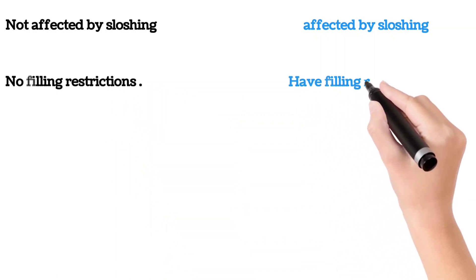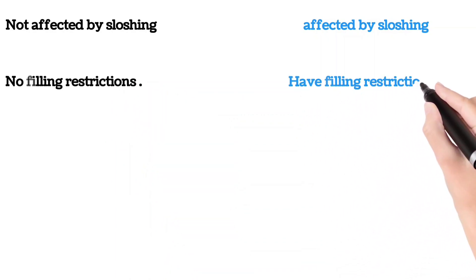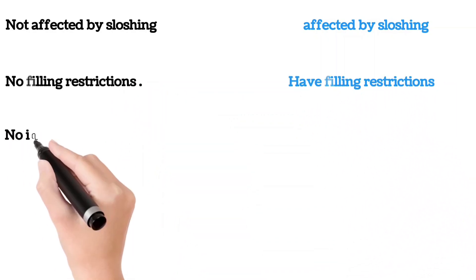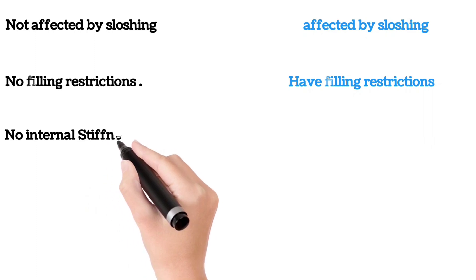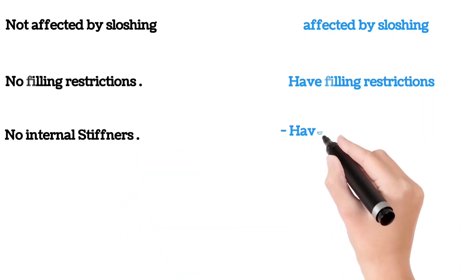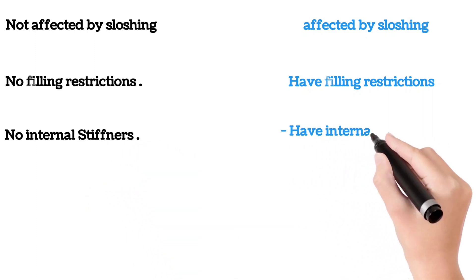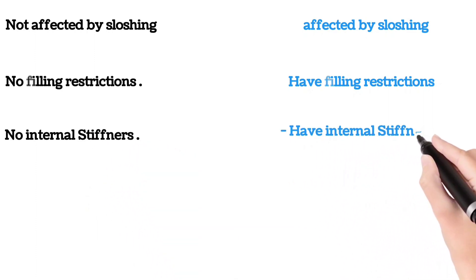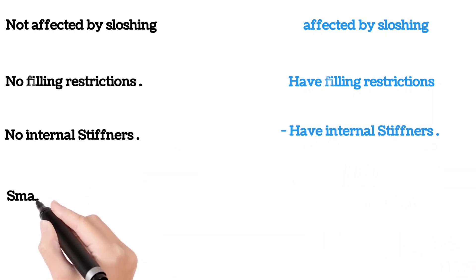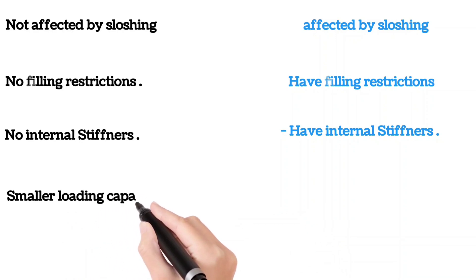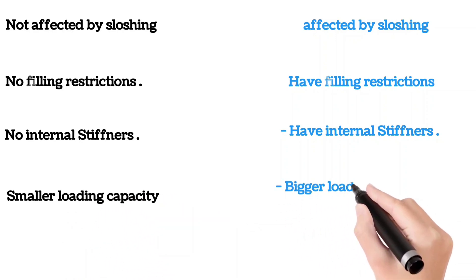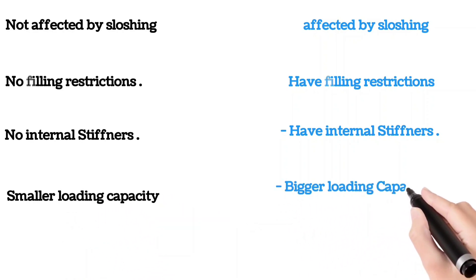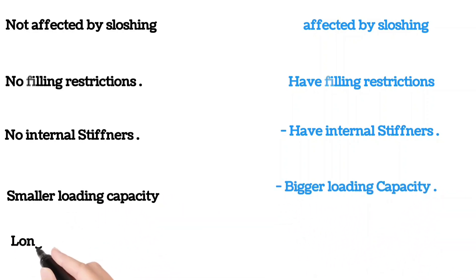MOZ type has no internal stiffeners whereas membrane type has internal stiffeners. MOZ type has smaller loading capacity whereas membrane type has bigger loading capacity. MOZ type requires longer dry dock whereas membrane type requires shorter dry dock.